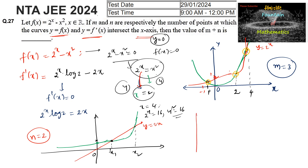The question asks for the value of m + n, which equals 3 + 2 = 5. So 5 is the answer.